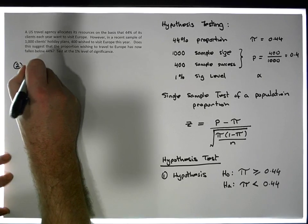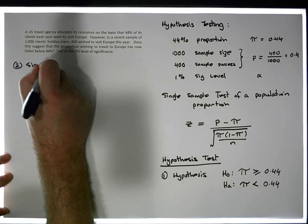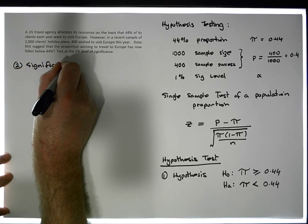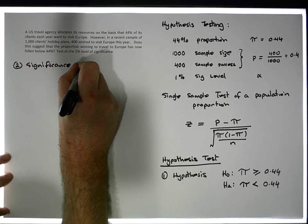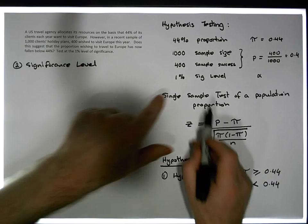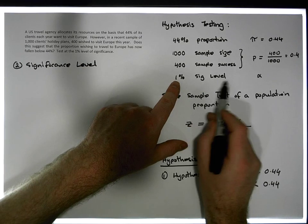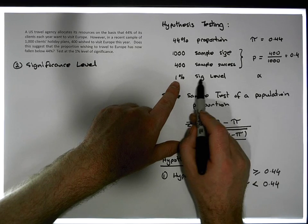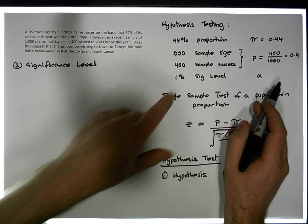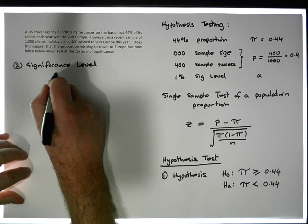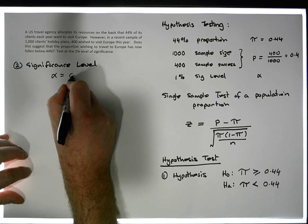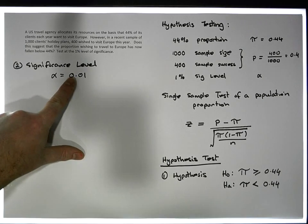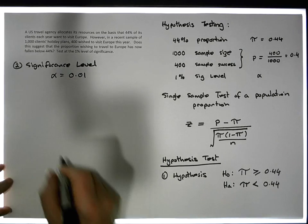Step two is to define our significance level. The significance level is alpha, and alpha is equal to 0.01 — that's what 1% is as a decimal.